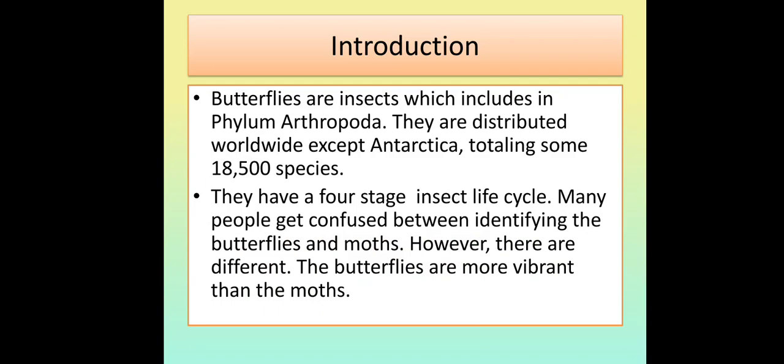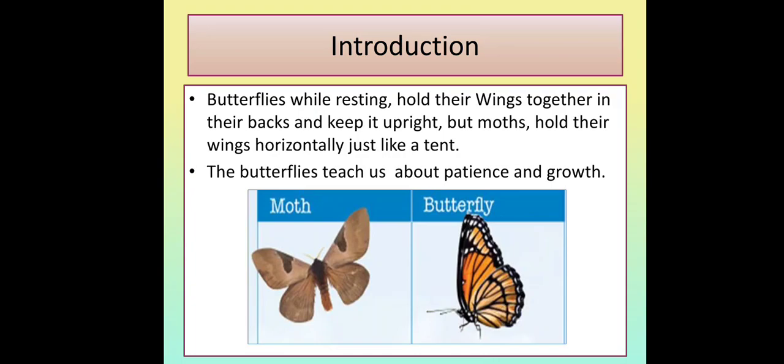They have a four-stage insect life cycle. Many people get confused between identifying butterflies and moths. However, they are different — butterflies are more vibrant than moths. Butterflies while resting hold their wings together on their backs and keep them upright, but moths hold their wings horizontally just like a tent. Butterflies teach us about patience and growth.